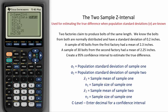A sample of 30 bolts from the second factory had a mean of 2.25 inches. 2.25 is the sample mean of factory 2. 30 is the sample size from factory 2.